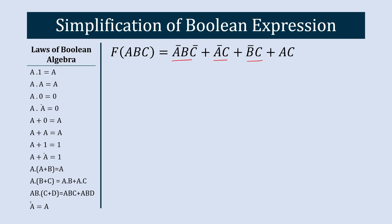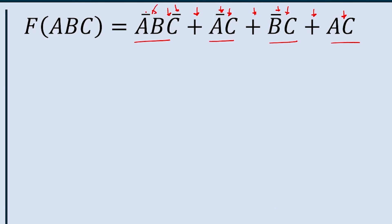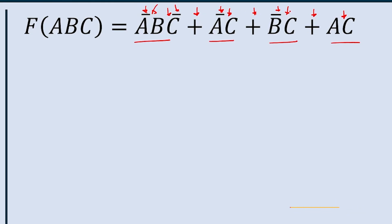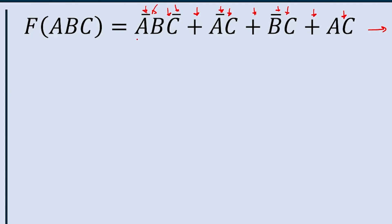Now let's jump to the next equation: ĀBC̄ + ĀC + B̄C + AC. Let's count how many gates are needed: AND gate, OR gate, AND gate, NOT gate, OR gate, AND gate, NOT gate, OR gate, NOT gate, AND gate, AND gate, OR gate — one, two, three, four, five, six, seven, eight, nine, ten, eleven, twelve. We need 12 gates to represent this expression. Now let's do the simplification.